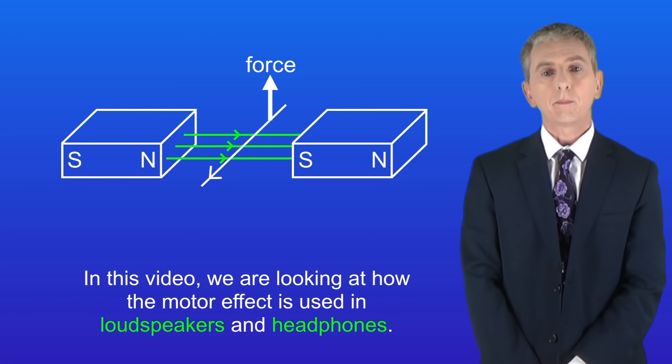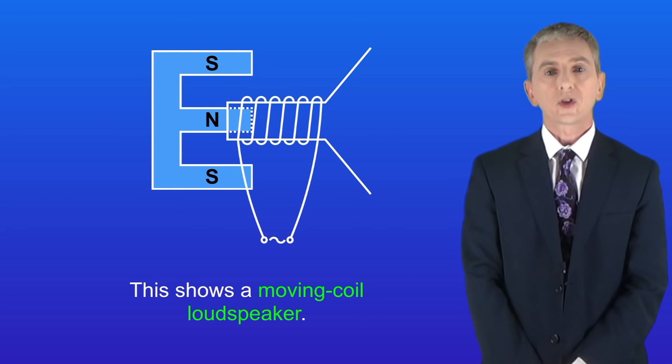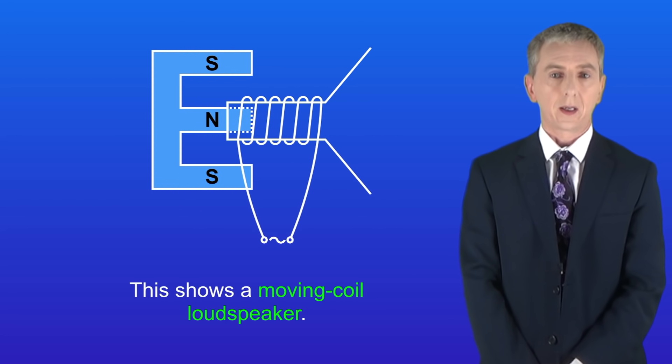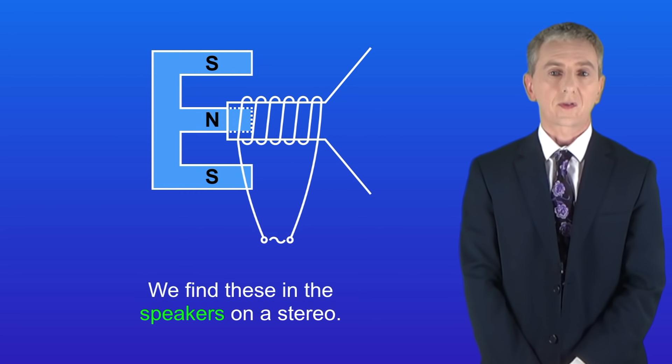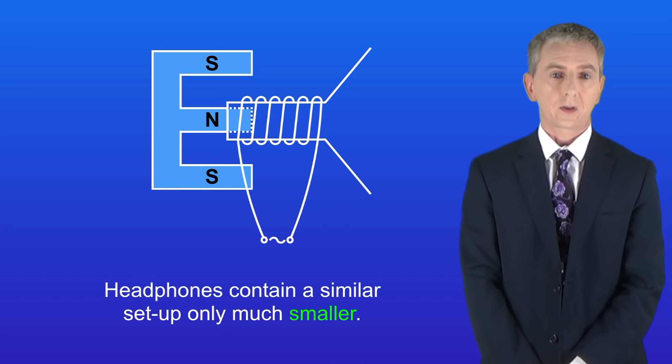In this video we're looking at how the motor effect is used in loudspeakers and headphones. I'm showing you here a moving coil loudspeaker. We find these in the speakers on a stereo. Headphones contain a similar setup, only much smaller.